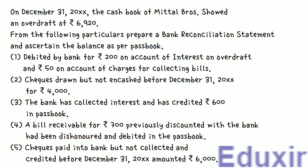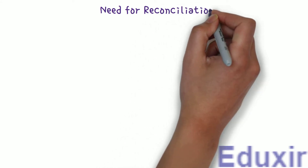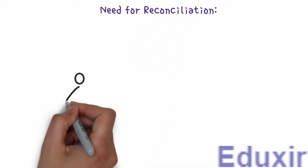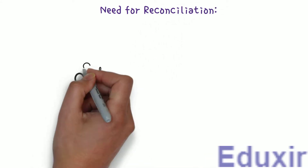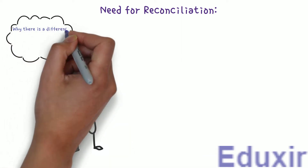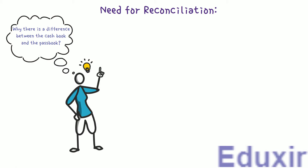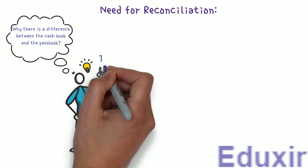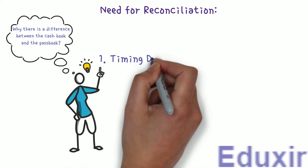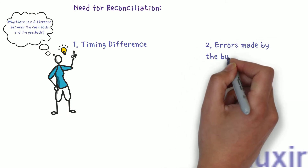Before we proceed with the analysis of these particulars, let's first recap about why there is a need for reconciliation. By preparing the bank reconciliation statement, we get an idea about why there is a difference between the cashbook and the passbook. The difference could be due to timing difference in recording the transaction, or errors made by the business or the bank.